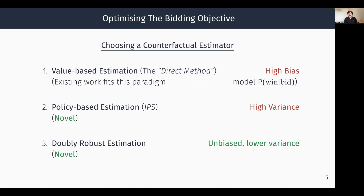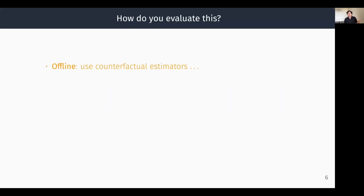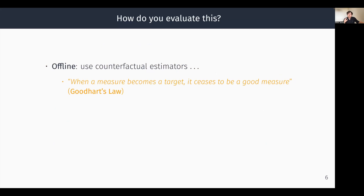This raises a core question: how do you properly evaluate? As machine learning researchers, we often have the reflex of thinking about offline experiments — we have large amounts of data, do a train-test split, and use counterfactual estimators as evaluation metrics on test sets. Except that doing this leads to a phenomenon known as Goodhart's law: when a measure becomes a target, it ceases to be a good measure. We have three objective functions, and the choice of evaluation metric will rather trivially tell you the optimal objective function — whichever directly optimizes the same estimator.